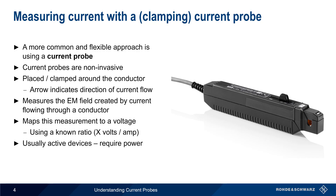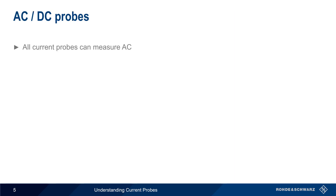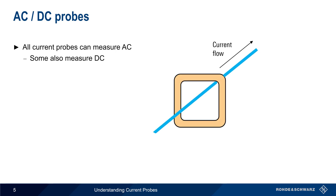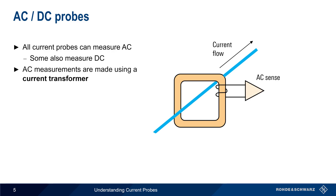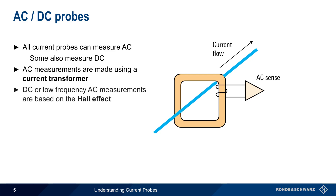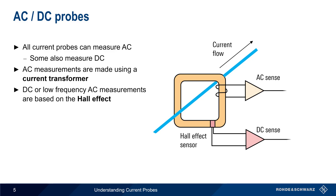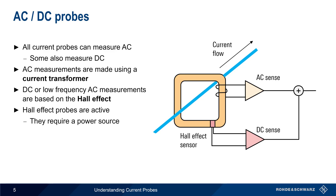Almost all current probes are active devices — that is, they require power to operate. All current probes can detect and measure AC, but some are also able to measure DC currents as well. Different mechanisms are used for each type of measurement. AC current measurements are made using a current transformer, whereas DC or very low-frequency AC current measurements are made using something called a Hall effect sensor. Probes that measure down to DC use a combination of these two methods. Note that Hall effect probes are active, and thus AC-DC probes are usually active as well.